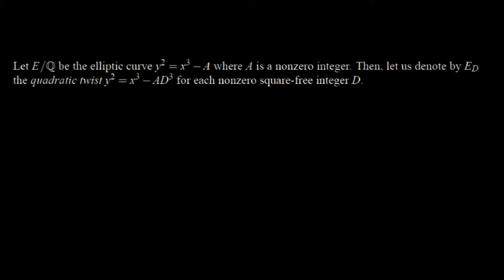Let E be the elliptic curve given by this Mordell equation. Denote by E subscript d this quadratic twist.